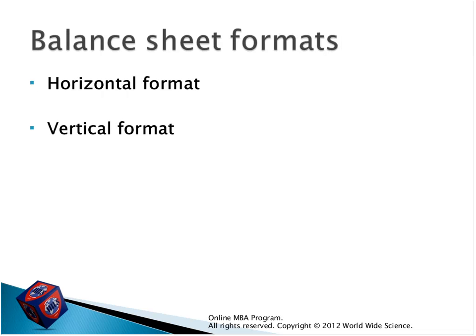The balance sheet has two kinds of formats: horizontal and vertical. In the horizontal format, the balance sheet has two sides — on the left-hand side you have the assets, and on the right-hand side you have liabilities and equities. In the vertical format, assets come first, then liabilities and equities come underneath the assets.